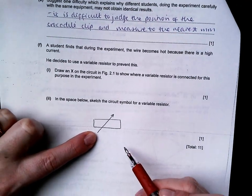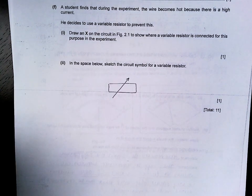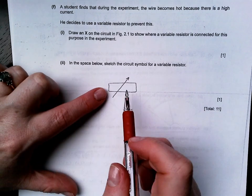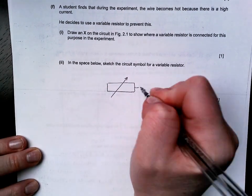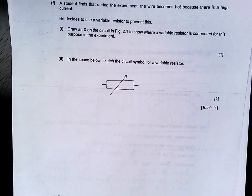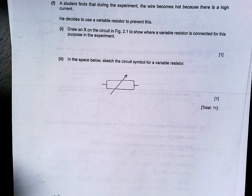And then a shocking number of people got this wrong. This was an easy question. In the space below, sketch the circuit symbol for a variable resistor. You knew that you had to memorize these. A resistor is just a rectangle and then to make it variable, you add an arrow through it.